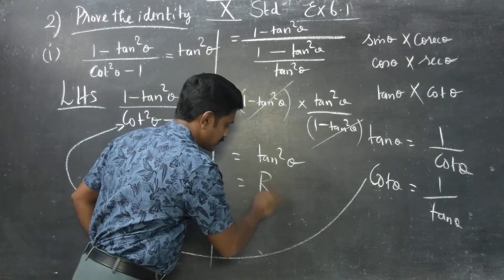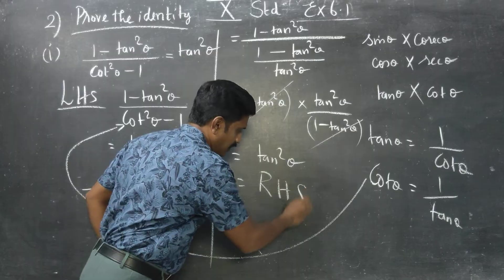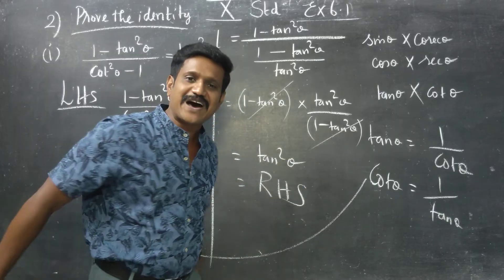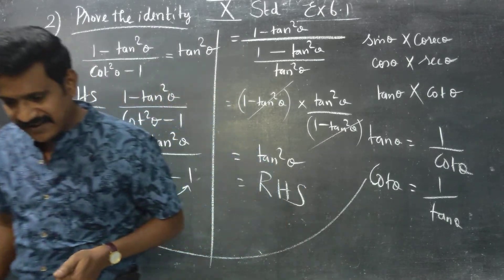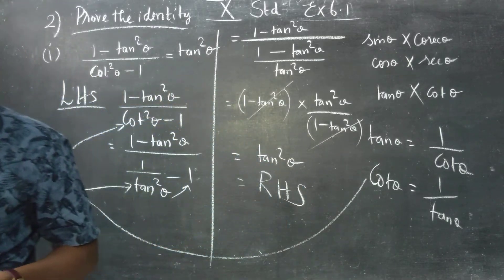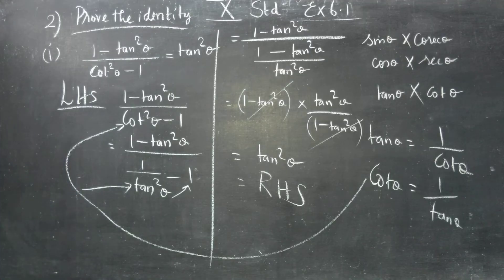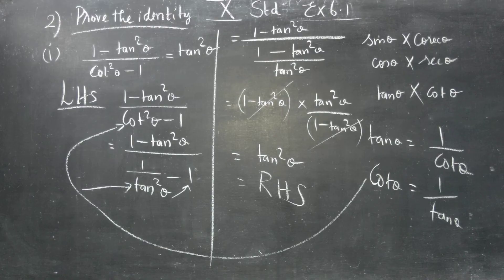RHS is tan square theta. We have proved the identity. For proving this identity you must know a single formula: cot theta is equal to 1 by tan. Thank you students.